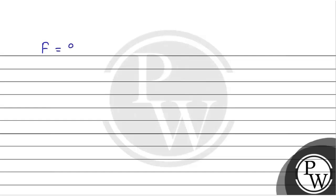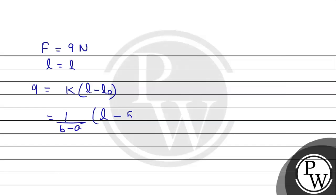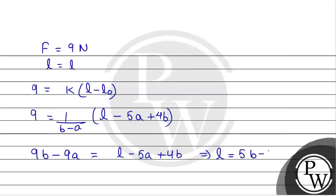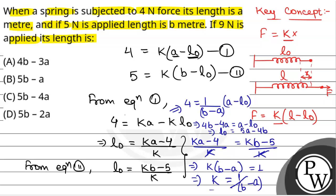If F equals 9N, let the length of the spring be L. So we have 9 = k into (L minus L0). Putting k = 1/(B minus A) and L0 = 5A minus 4B: 9 = [1/(B minus A)] into (L minus (5A minus 4B)), giving 9B minus 9A = L minus 5A plus 4B. Solving for L, we get L = 5B minus 4A. So the correct option is 5B minus 4A, which is option C.